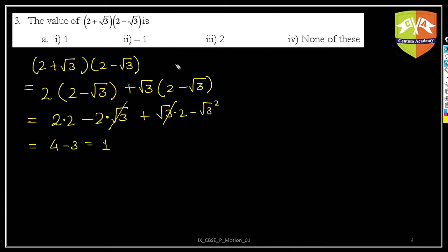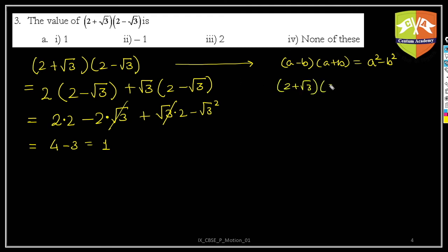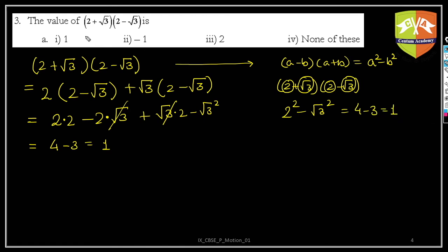Alternatively, use the identity (a + b)(a − b) = a² − b². Here a = 2, b = √3, so it is 2² − (√3)² = 4 − 3 = 1. Both methods give the same answer: 1. The answer is option A.